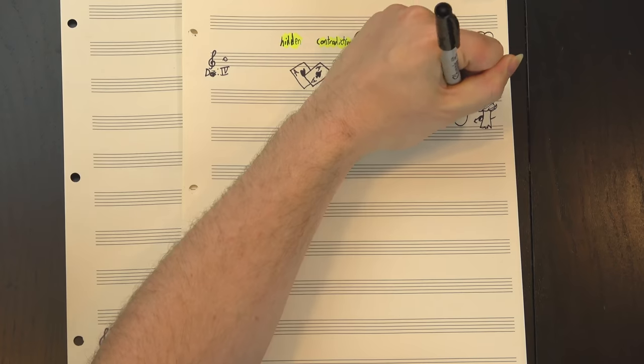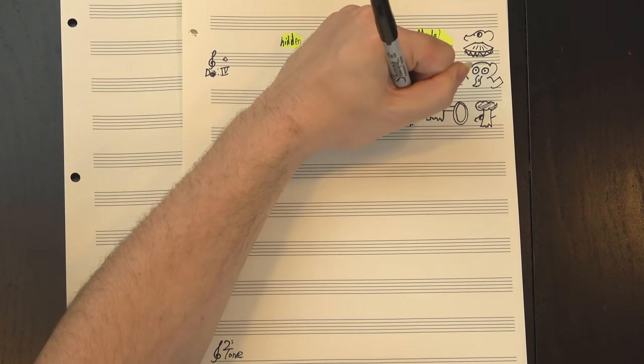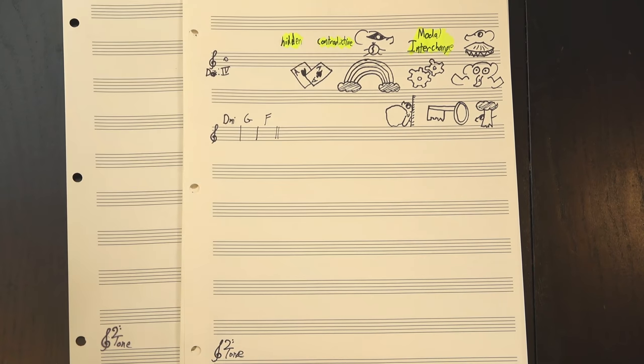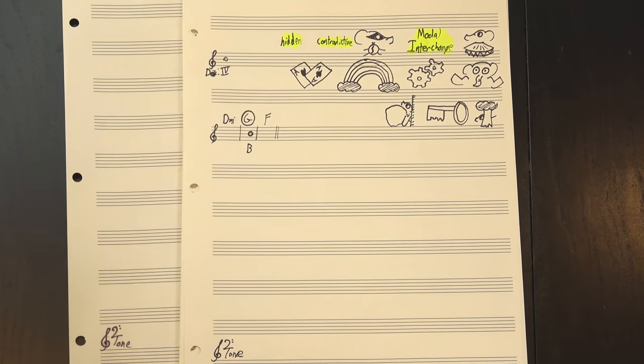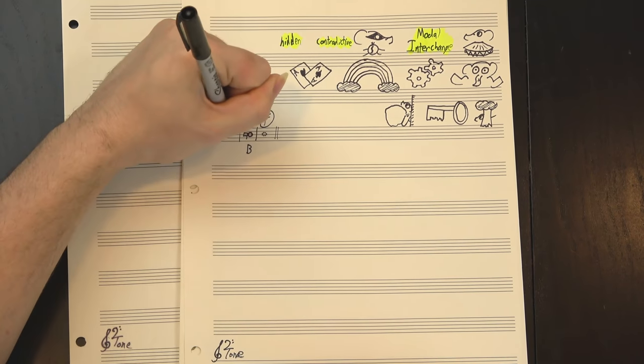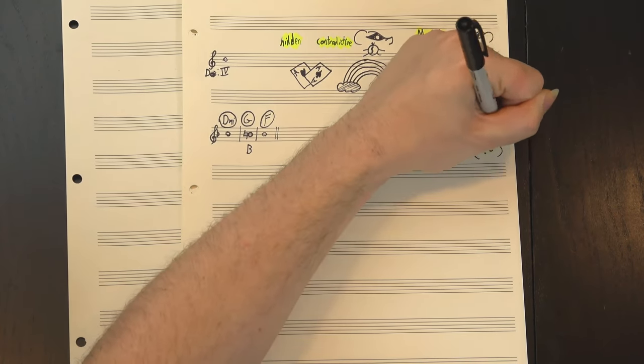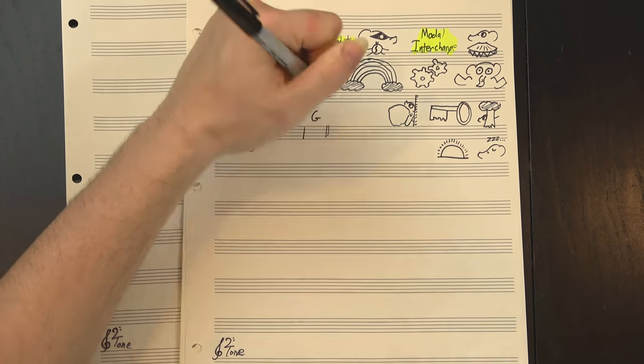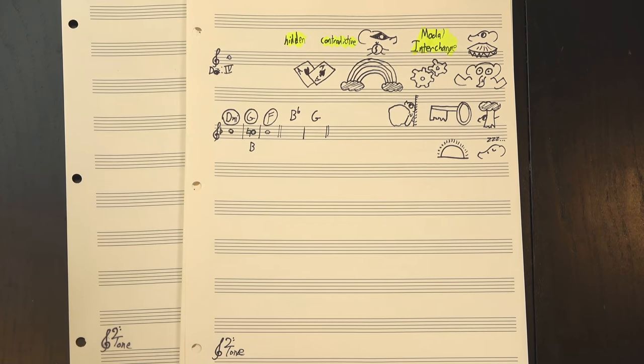Hidden interchange is where the chord you're using may not fit in the key, but it still works with the chords before and after it. Like, in the intro, we had D minor, G major, F major. That G major includes a B natural, which isn't in the key, but neither F major nor D minor has any kind of B in it, so you don't really notice the issue. It just sounds like a brighter IV chord.